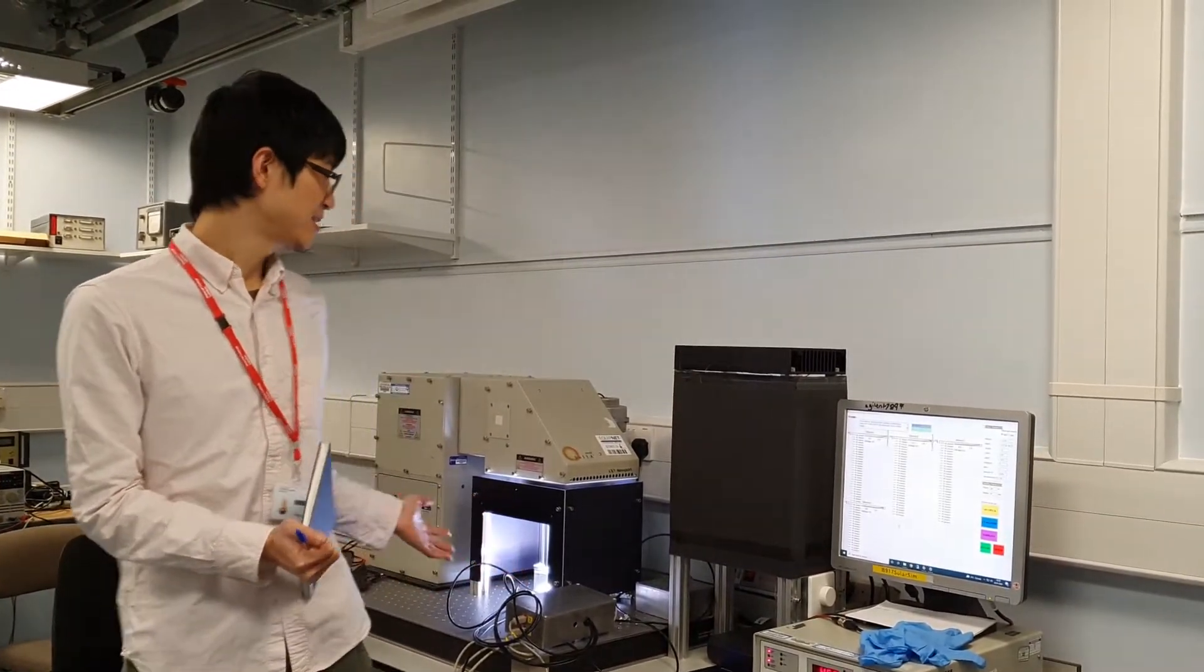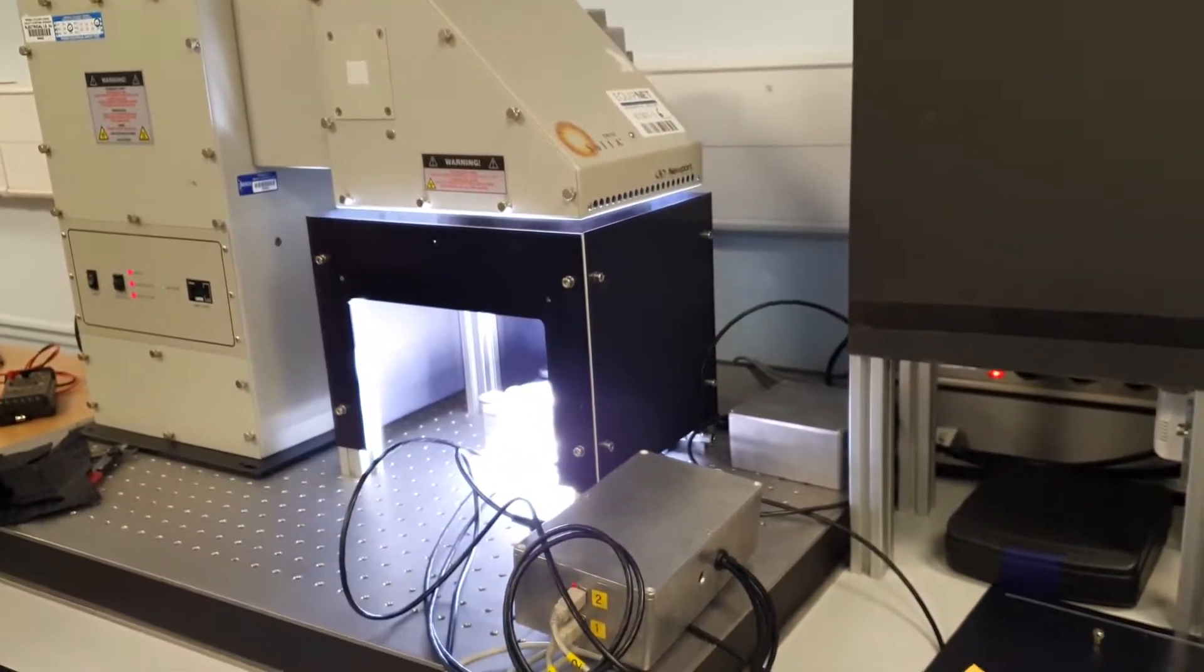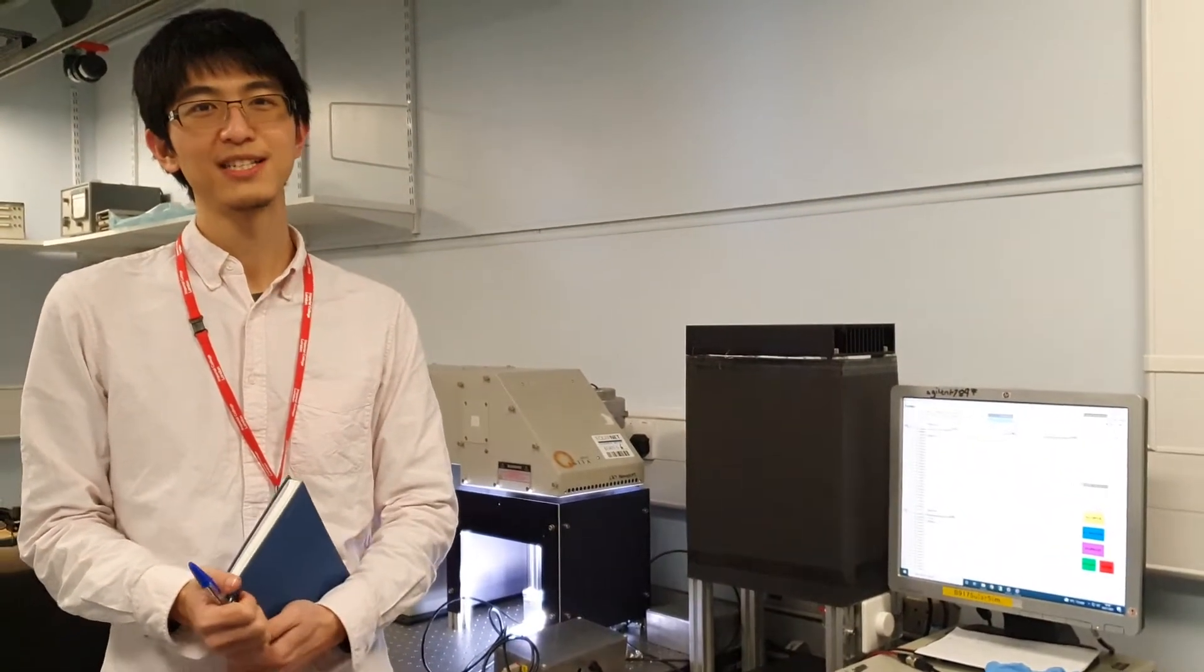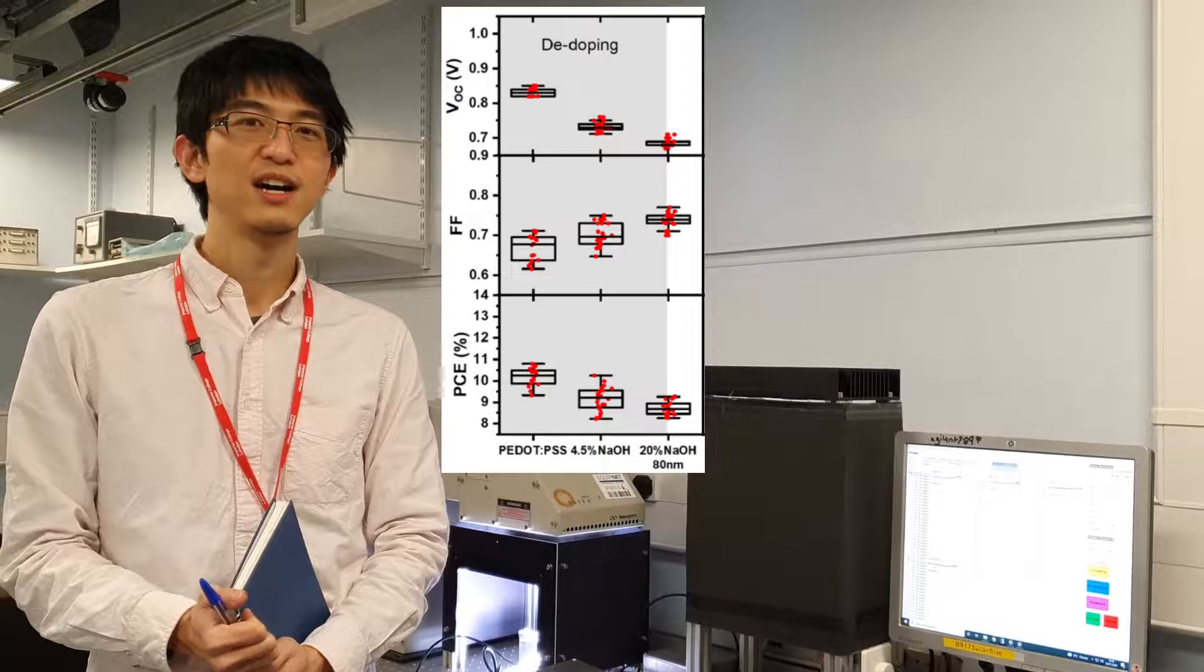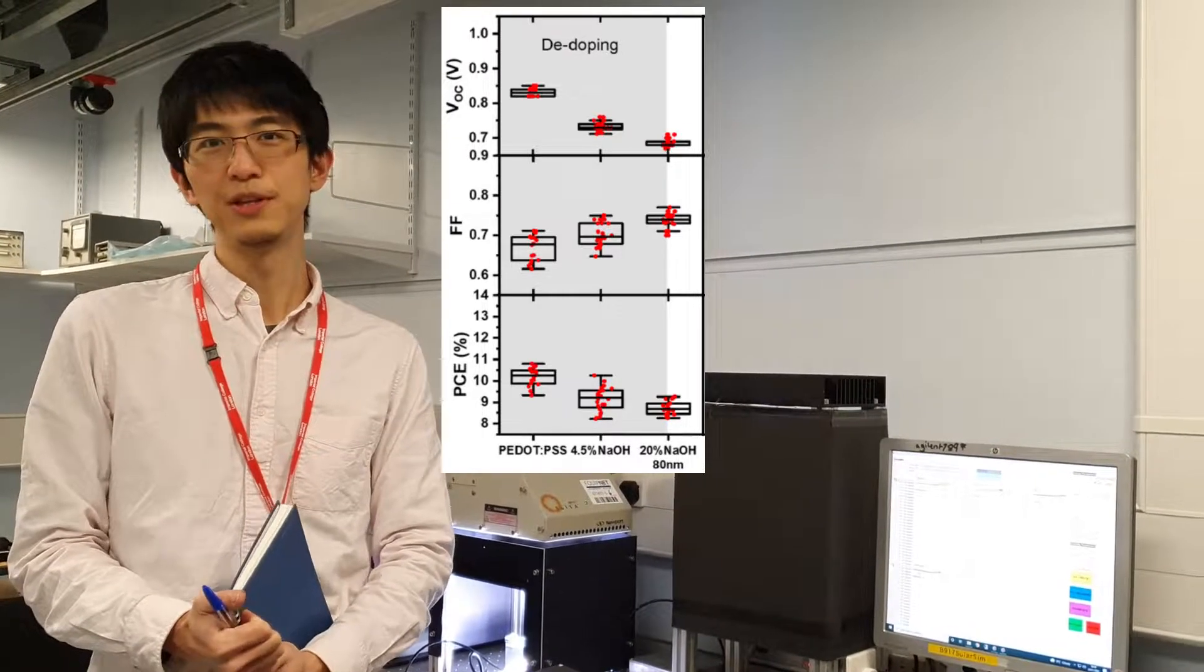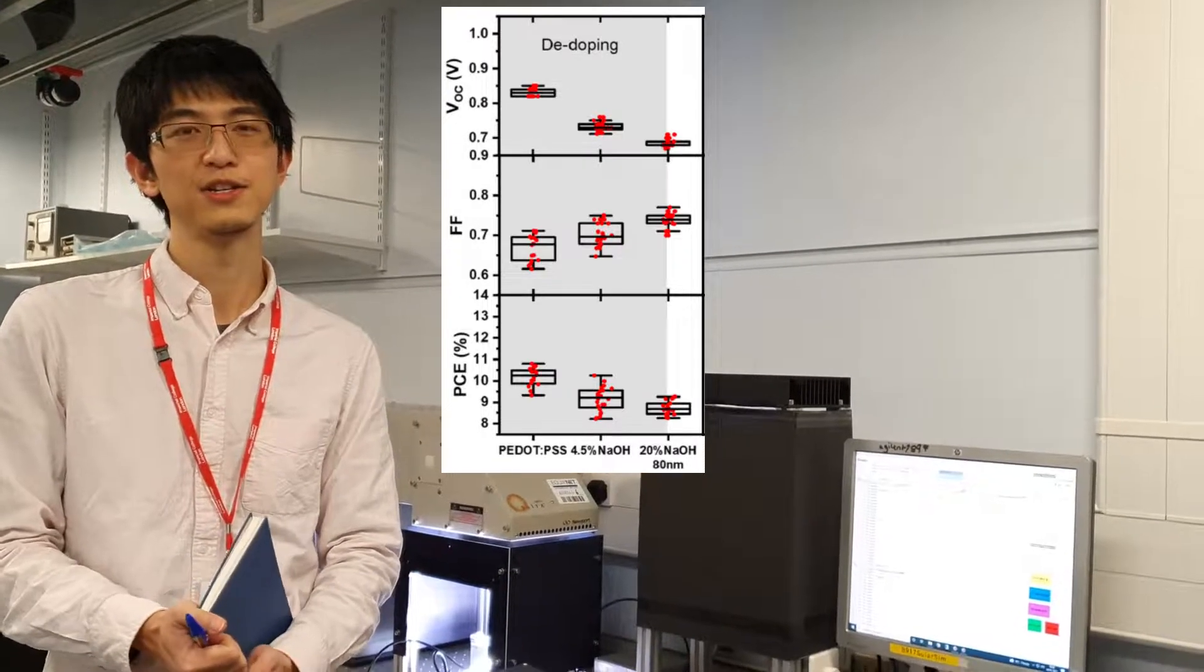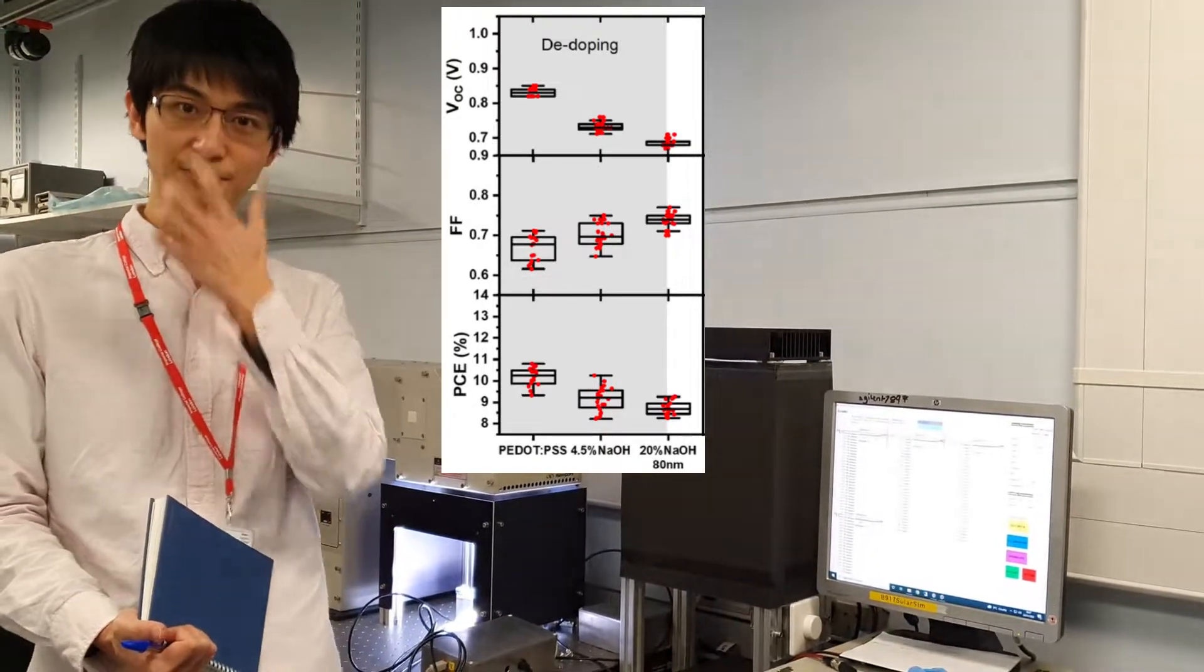After we de-dope our PEDOT:PSS, we apply them into our solar cell systems, and here you can see this is our solar simulator, currently under operation with very strong one-sun light at the moment. For the de-doped PEDOT:PSS perovskite system, their VOC are actually decreased, which means there is a lower voltage output, and also there is a lower power conversion efficiency, meaning the conversion of the sunlight power into electric power is getting less and less efficient.